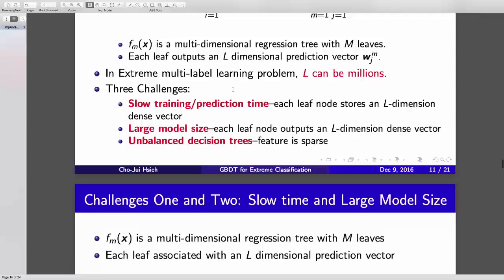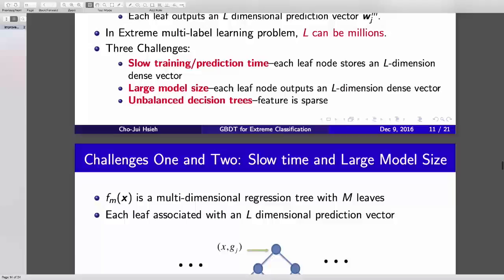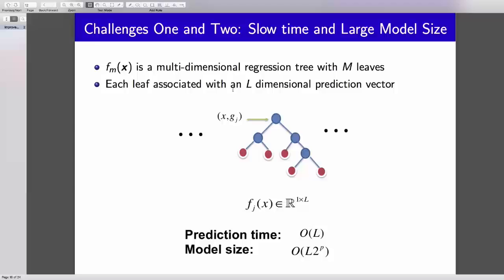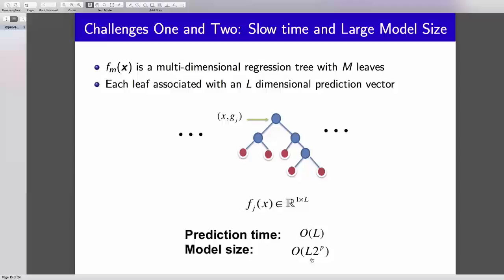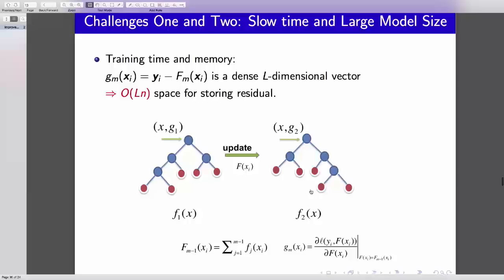In the first two challenges, slow training and prediction time and large model size, is because your tree wants to output the label vector for training data. So each output of the leaf node should be an L dimensional vector. If each one you store an L dimensional vector, then you have prediction time order L, because after you go into the leaf, you need to go through this L dimensional vector. And the model size is order L times number of leaves in a tree, which is very large. Even worse is in the training time, the decision tree is untrainable in this case.